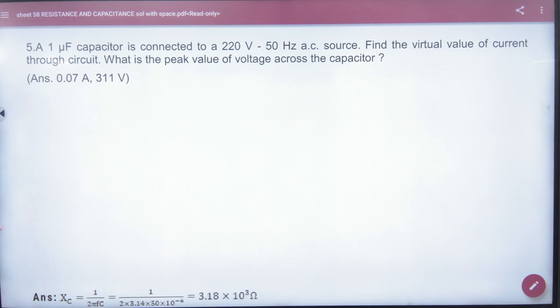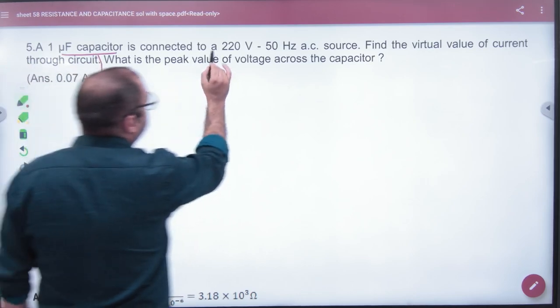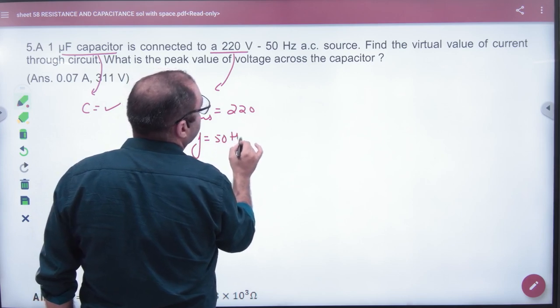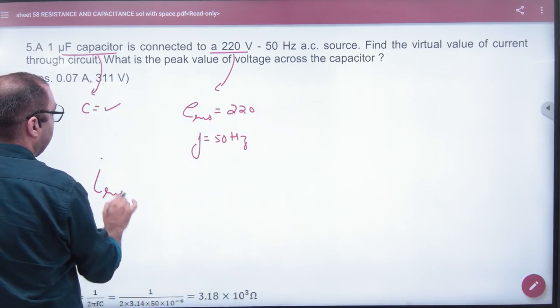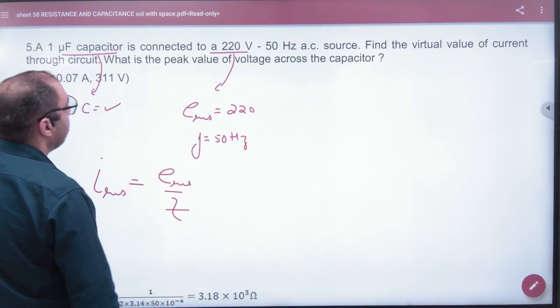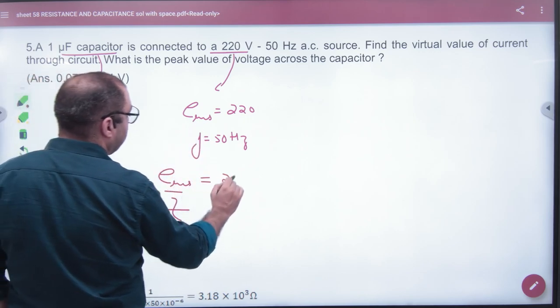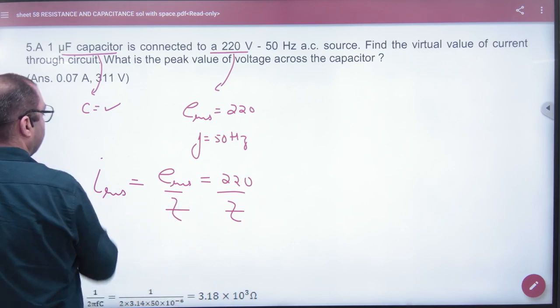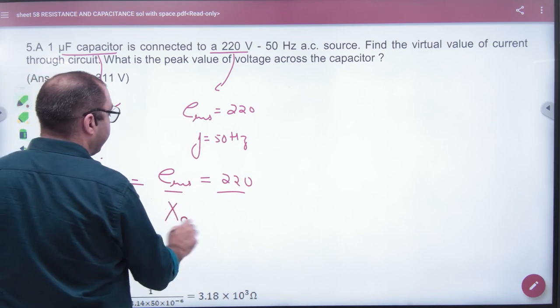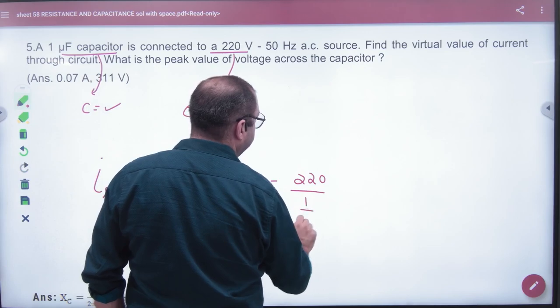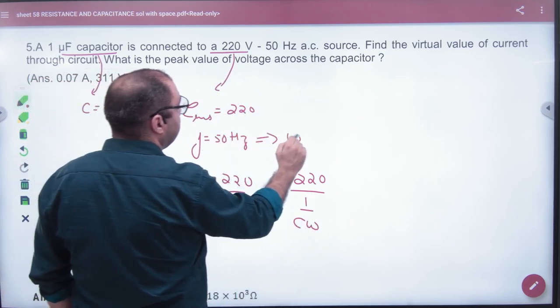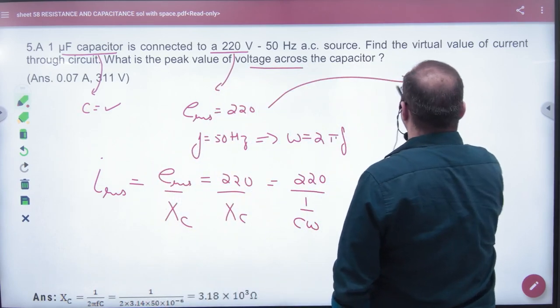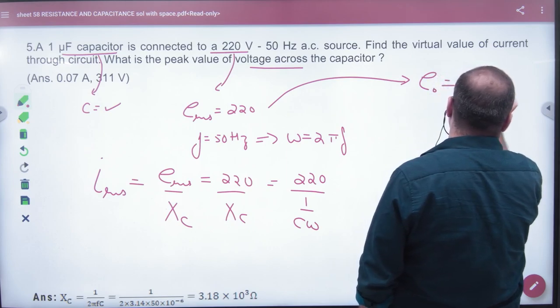Question is: what values are given? C ki value given hai, connected to - what is given? E RMS ki value given hai. Frequency ki value given hai. Find virtual value of current. What to find? I RMS. I RMS is E RMS divided by Z. So E RMS is 220. What do you need? Z. What is Z? There is nothing else here. Only capacitor is connected. If capacitor is there, then directly what will it be? X C. So 220 divided by 1 by C omega. C is known, omega is known, frequency se kya jayega? Omega. So from here value will come - I RMS. I RMS came. Peak value of voltage has to be found. Now E RMS is given in question, so peak value will be? E RMS into root 2. Answer.